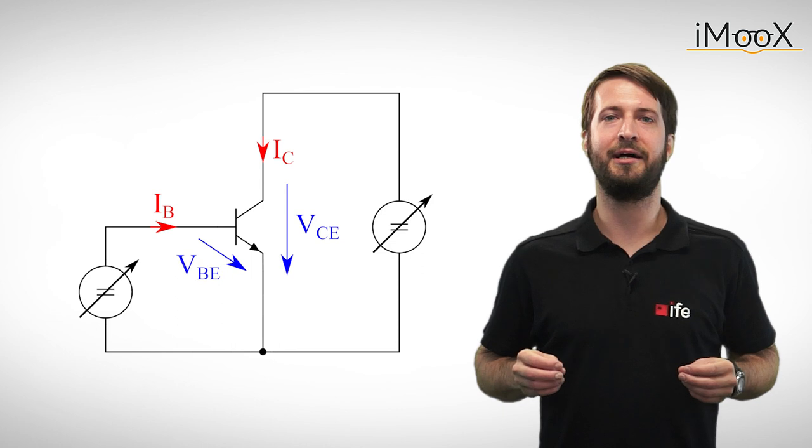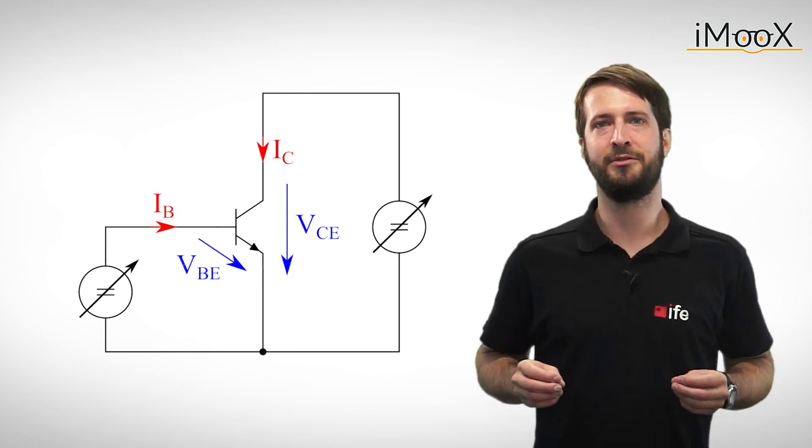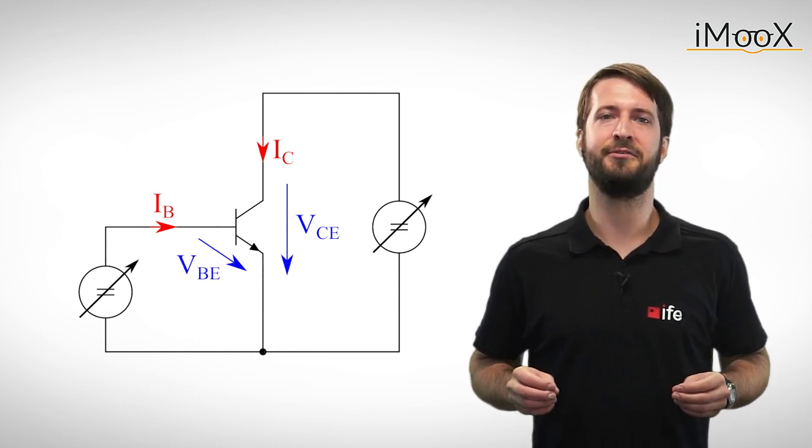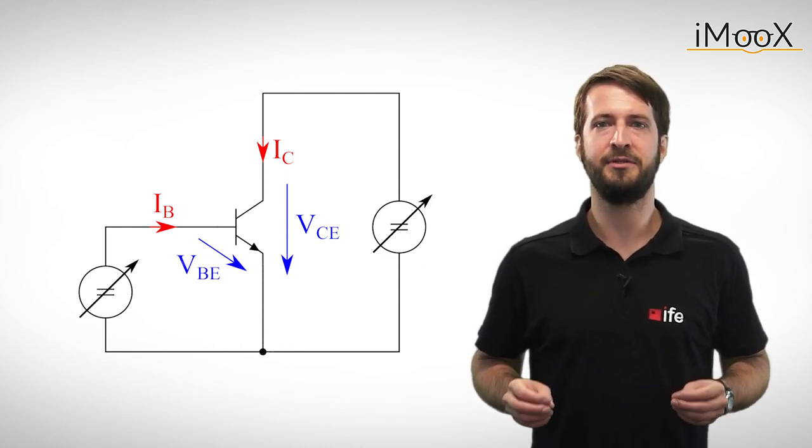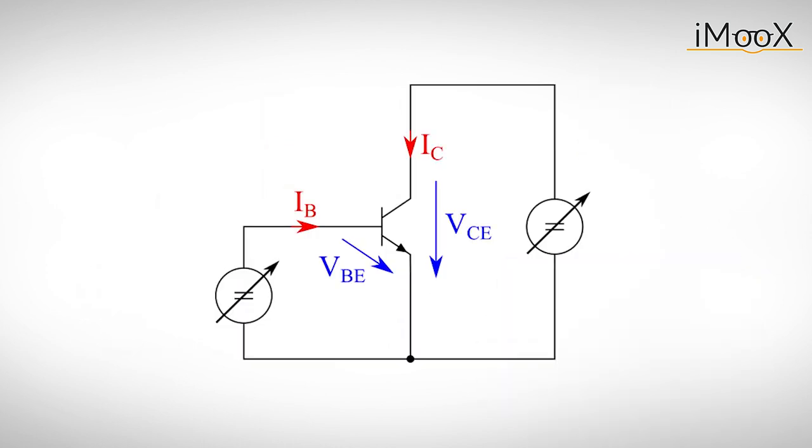In order to get a better understanding of the behavior of the bipolar transistor, we have to do a variety of measurements. So let's consider the following measurement arrangement to derive some dependencies of the transistor. The circuit consists of an NPN transistor and two variable voltage sources to control the base emitter voltage VBE and the collector emitter voltage VCE.